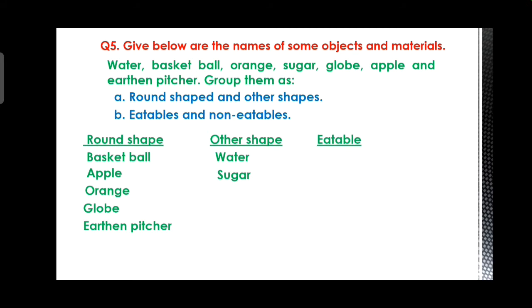Fifth question: given below are the names of some objects and materials - water, basket ball, orange, sugar, globe, apple, and earthen pitcher. Group them as round shaped and other shapes. Round shape: basket ball, apple, orange, globe, earthen pitcher. Other shapes: water and sugar. The substances which can be eaten are known as eatable, otherwise it is known as non-eatable. Eatable are water, orange, apple, sugar. Non-eatable are basketball, globe, earthen pitcher.